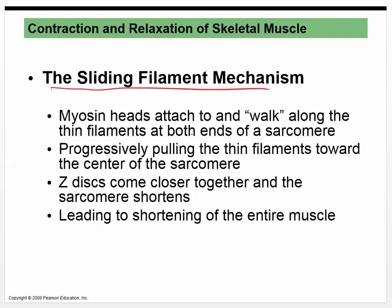This allows muscle contraction to begin as myosin binds to the actin — the only thing preventing it is the tropomyosin molecule being in the way. We call this the sliding filament mechanism. When microscopes were first invented and we were looking at muscle, we didn't know how muscles shortened — there were times we thought they filled up with fluid. What we figured out is that there were actually different filaments that would slide past each other. The myosin heads pull on the actin, which moves inward in both directions, and the muscle gets shorter.